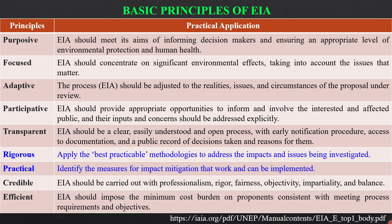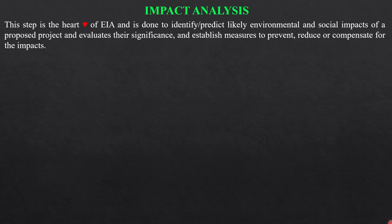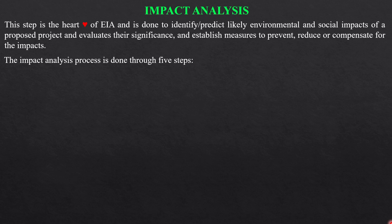Within these nine principles, rigorous and practical are focused on impact assessment and mitigation measures. Impact analysis is the heart of EIA and is done to identify likely environmental and social impacts of a proposed project, evaluate their significance, and establish measures to prevent, reduce, and compensate for the impacts. There are five steps of impact analysis.